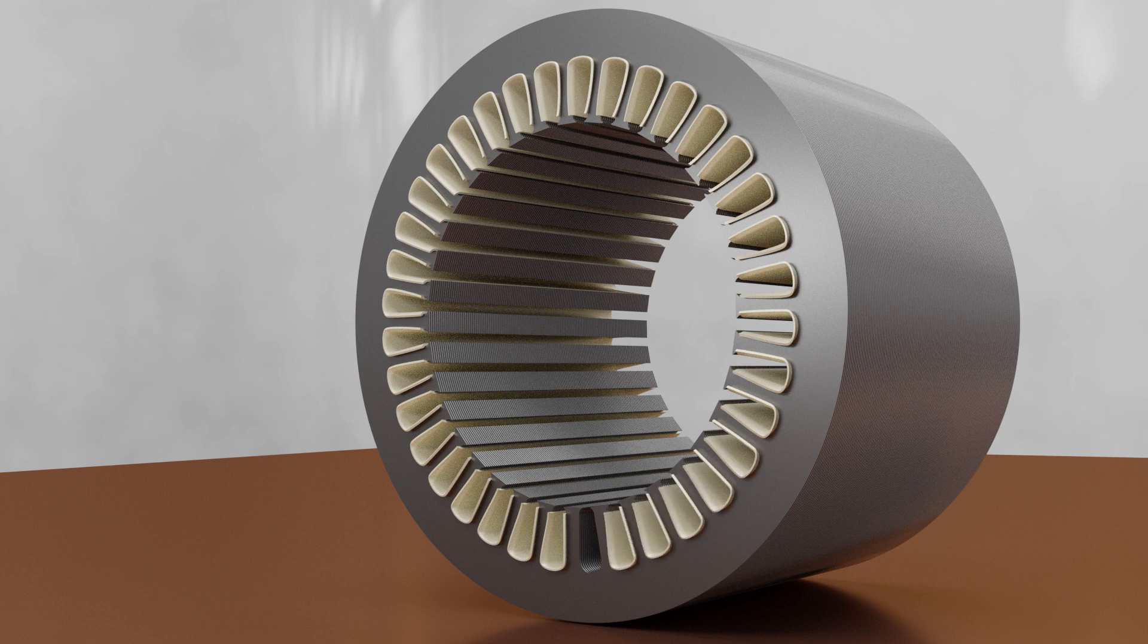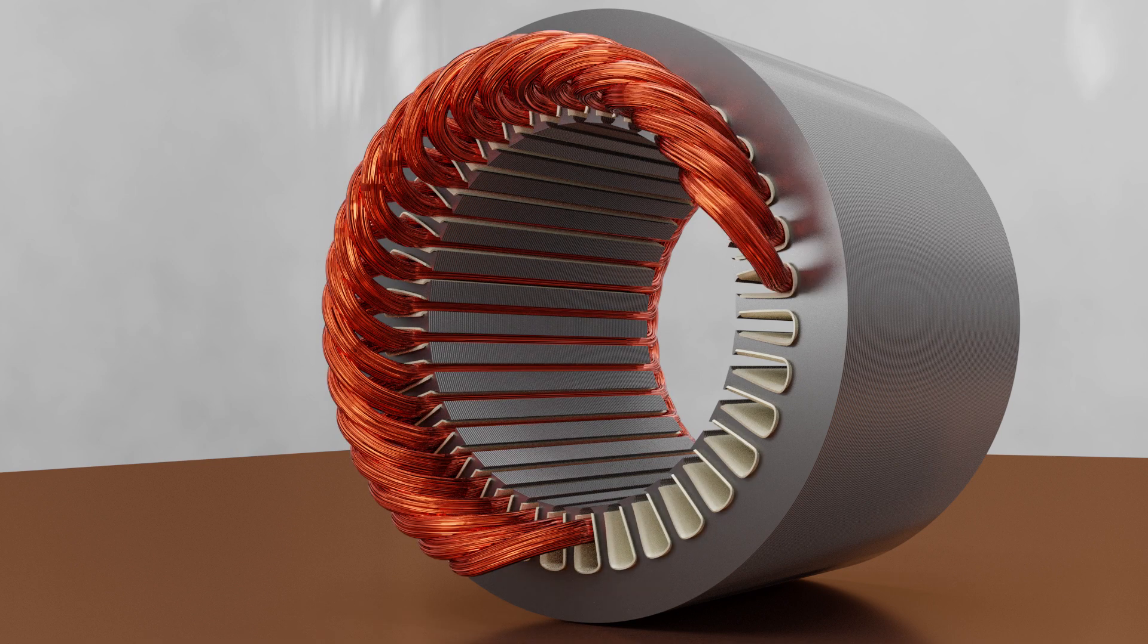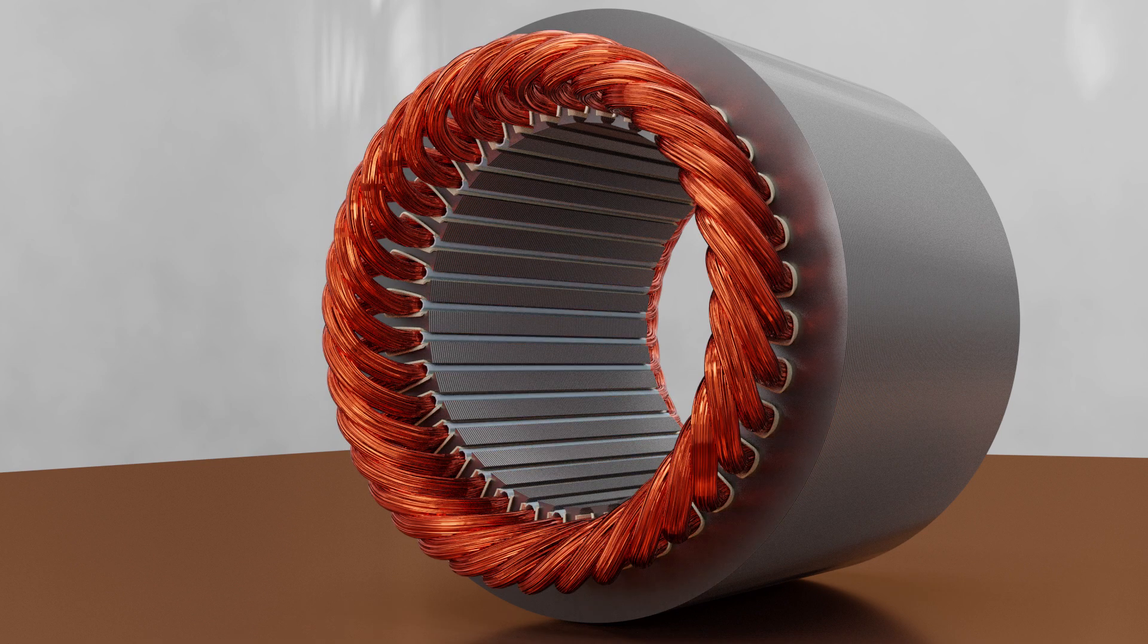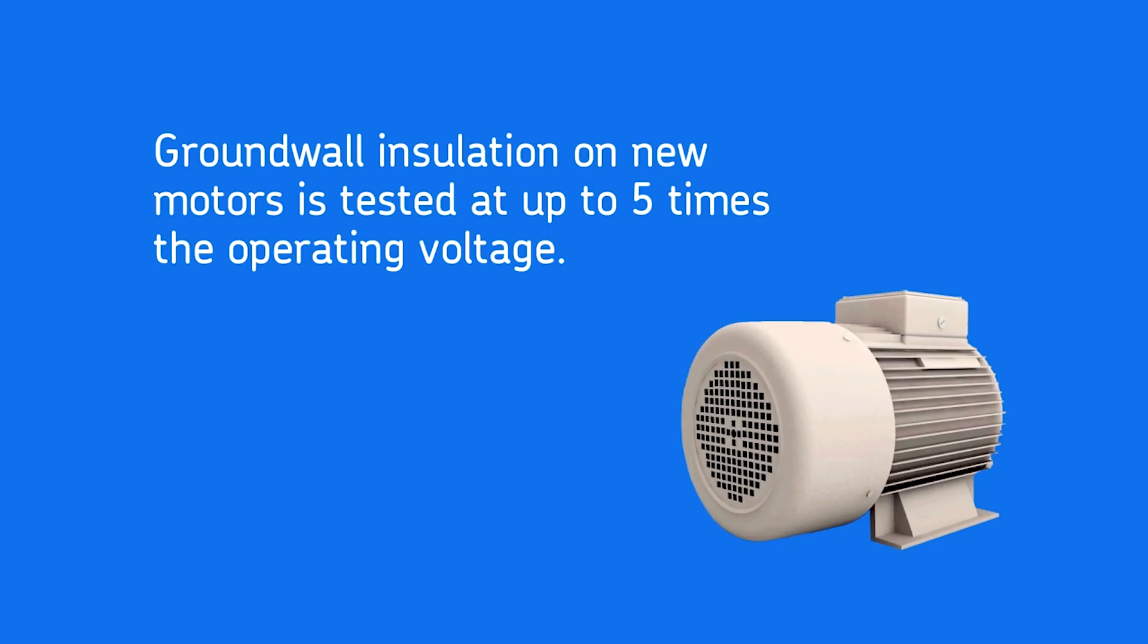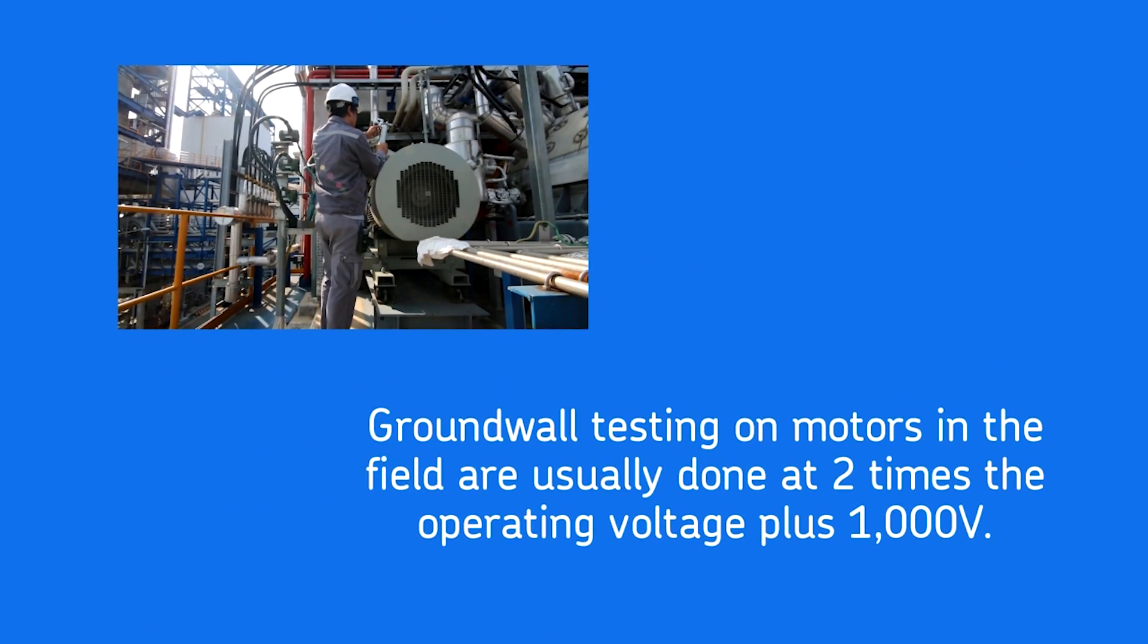The ground-wall insulation is the insulation between the stator windings and the stator core. When the motor is new, this ground-wall insulation is tested at voltages up to five times the operating voltage. For motors in the field, ground-wall testing is usually done at two times operating voltage plus one thousand volts.